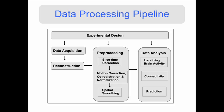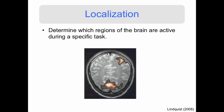The meat of the class is the data analysis portion, where we'll look at a variety of different topics. The first topic is localization: how do you determine which regions of the brain are active during a specific task? For example, in our finger tapping task, can we look at the fMRI data and find which regions of the brain were active while we were finger tapping?